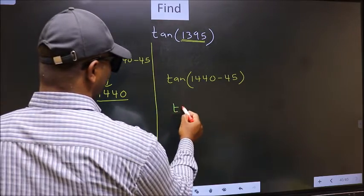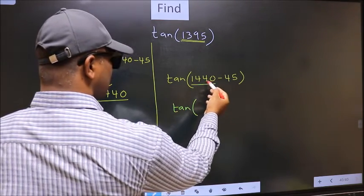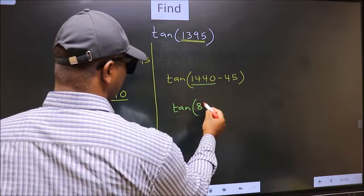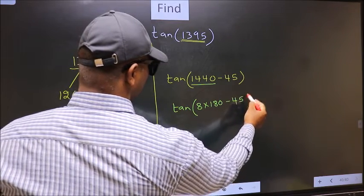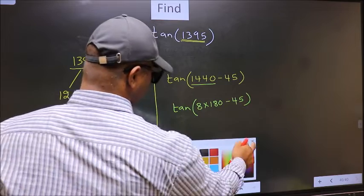Next, tan. In place of this, now we should write 8 times 180 minus 45.